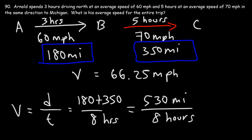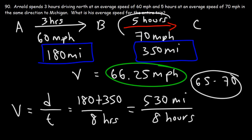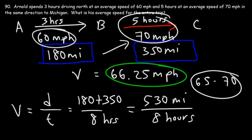As we assumed, the average speed of 66.25 mph is between 65 and 70, because he spends more time traveling at a higher speed, so the average is going to be closer to 70 than it is to 60.